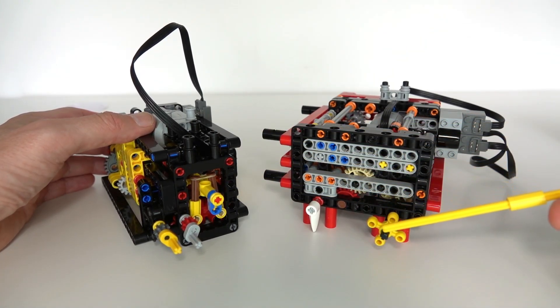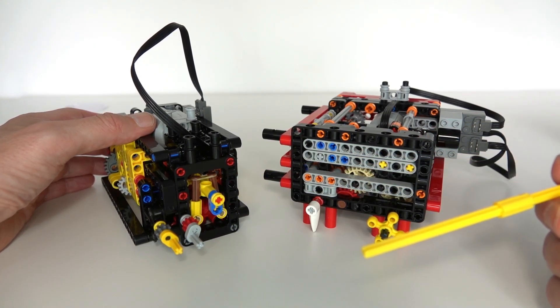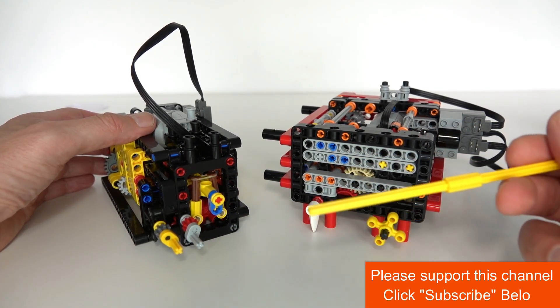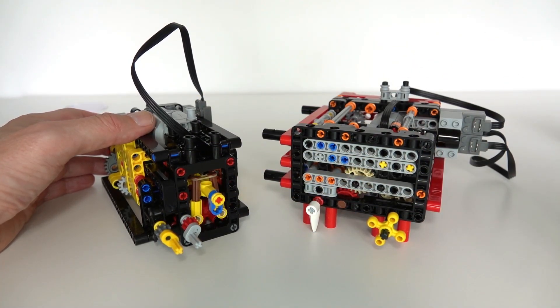The gearbox I'm presenting today is the one on the left. Instead of having just one output, I've created two outputs and each of these has two different speeds, namely forward and reverse. Each output can be selected to go either forwards or reverse with just one single motor.